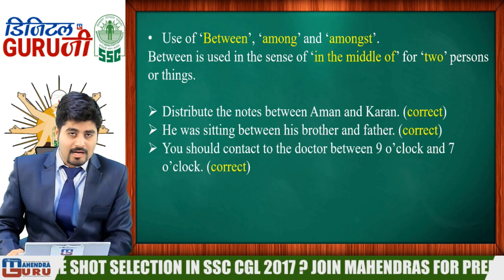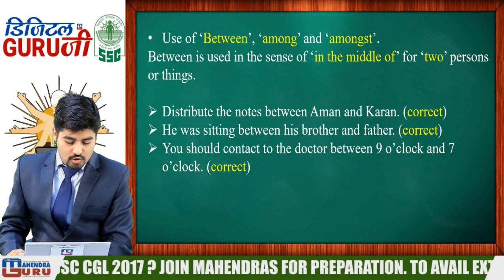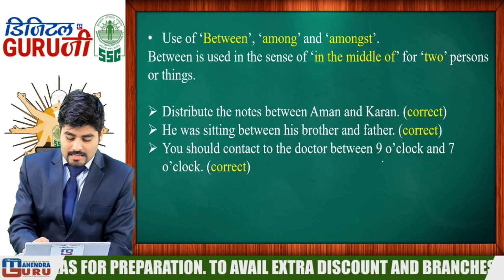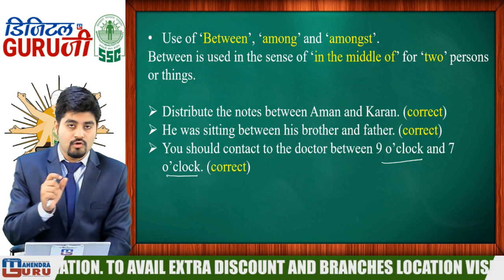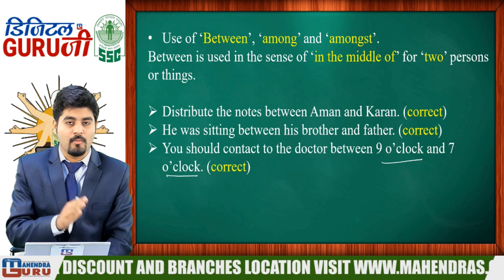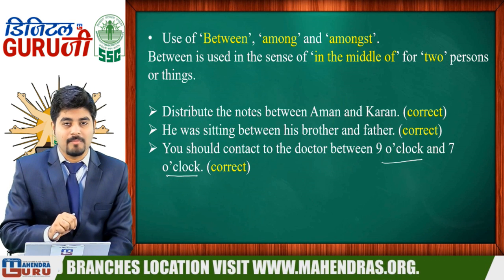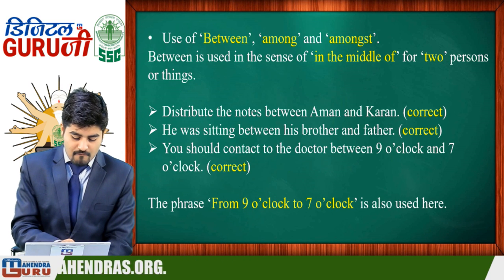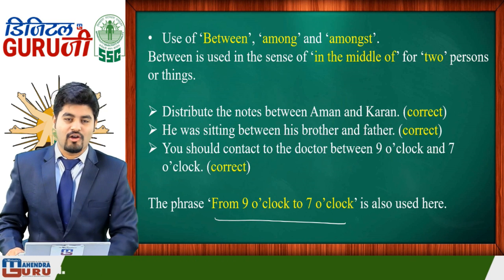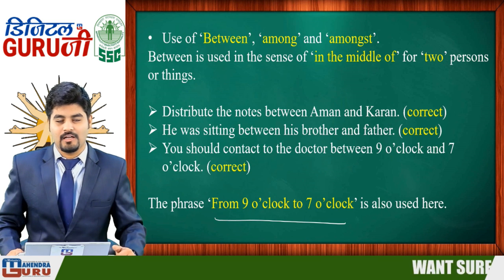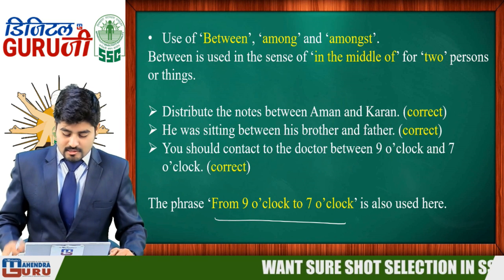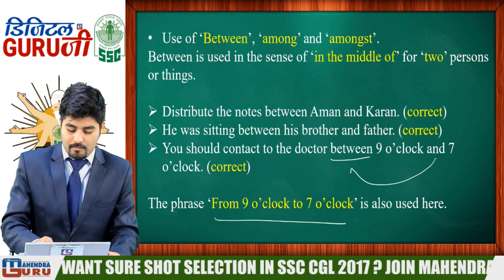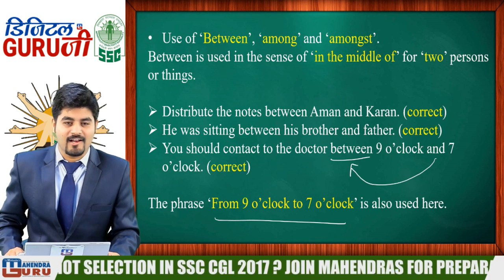If you talk about non-living things, for example: 'You should contact the doctor between 9 o'clock and 7 o'clock.' Here 'between' is used with two time references. Note that 'between' functions as a conjunction here, not just as a preposition. This is the general use — between is used when there are exactly two references. Clear?